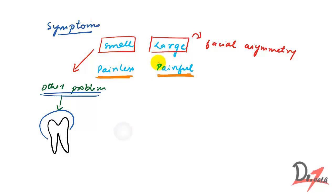It gets painful only when it is infected. So whether it is small or large, it will be painless. But if it is painful, that means it is infected. And by the way, large dentigerous cyst is uncommon.